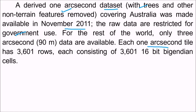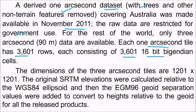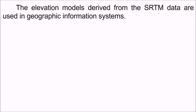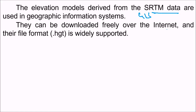Each 1 arc second tile has 3601 rows, each consisting of 3601 16-bit big-endian cells; the dimension of 3 arc second tiles is 1201 by 1201. The original SRTM elevation was calculated relative to the WGS84 geodetic system ellipsoid, and then the EGM96 geoid separation value was added to convert heights relative to the geoid for all released products. Elevation models derived from SRTM data are used in GIS and many other fields, and can be downloaded freely over the internet in .hgt (height) file format.